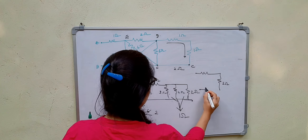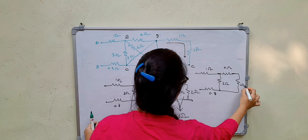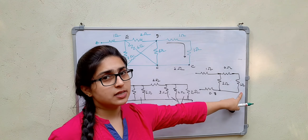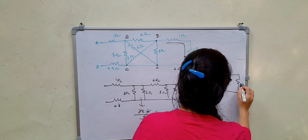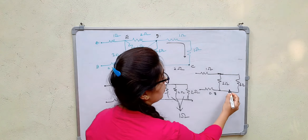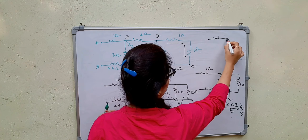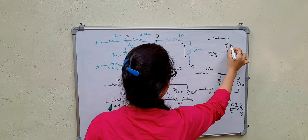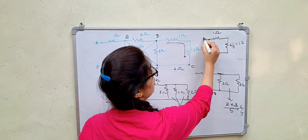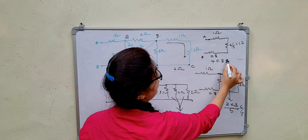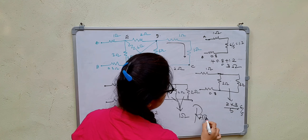The simplified circuit now has: 2 ohms, 0.8 ohms, 1 ohm, 2 ohms, and 1 ohm. The 2-ohm and 1-ohm are in series giving 3 ohms; 2 ohms and 3 ohms in parallel give 6/5 = 1.2 ohms. Finally: 1 + 0.8 + 1.2 = 3 ohms. So R_AB = 3 ohms.